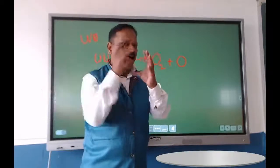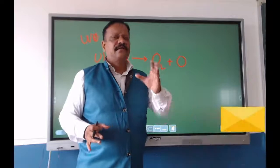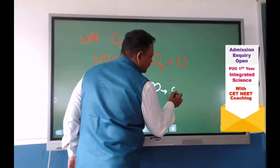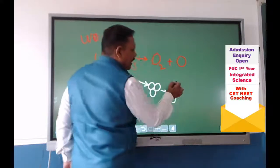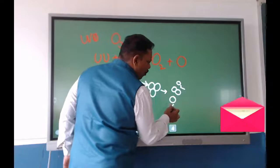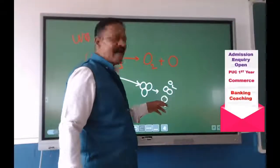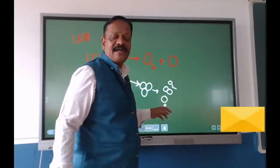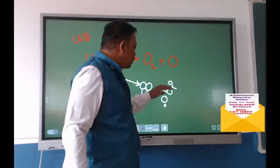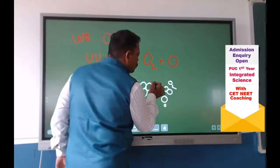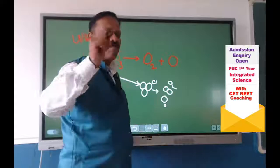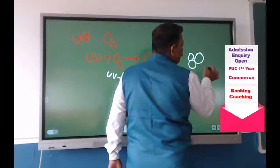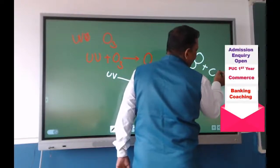UV rays are coming and striking into the ozone layer. The ozone molecules get separated into O2 and a single oxygen atom. This is a compound separating into a molecule and an atom. This separation is also caused by chlorine. The same thing happens — the ozone molecules are broken apart.